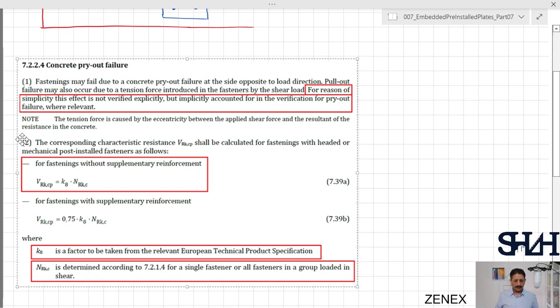In clause 7.2.2.4 concrete pry-out failure, item number 2, equation 7.39a represents the resistance for fastening without supplementary reinforcement. Supplementary reinforcement is completely another topic which does not fit in this example, and we do not have the information of the concrete wall.